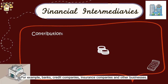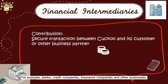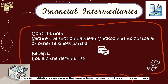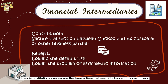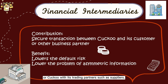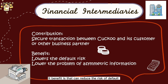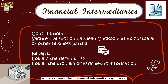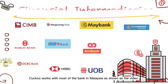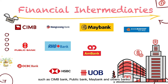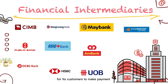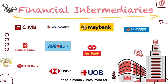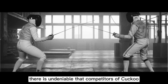Financial intermediaries help in financial transactions — for example, commercial banks, credit companies, insurance companies, and other financial institutions — which can secure transactions between Kuku and its customers or trading partners such as suppliers. The benefit is that it can reduce the risk of default and lower the problem of information asymmetry. Kuku works with most banks in Malaysia, such as CIMB Bank, Public Bank, Maybank, and others, for customers to make payments or monthly installments for products purchased or services provided.